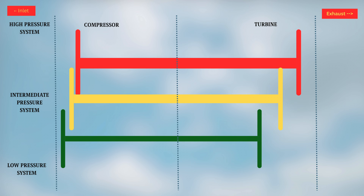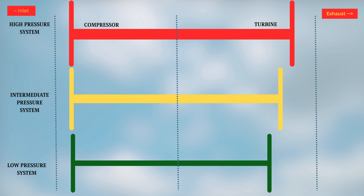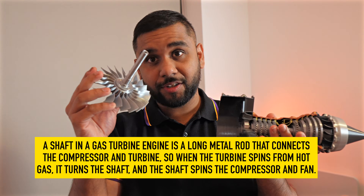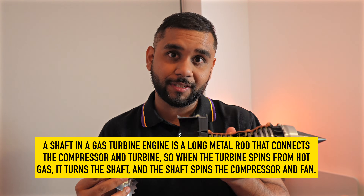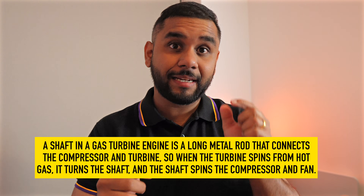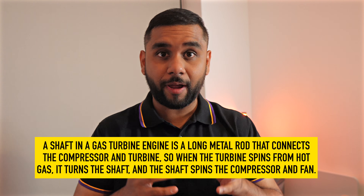The first thing you need to know is this engine is actually three engines sharing one body: the low pressure system, intermediate pressure system, and high pressure system. Each system has a compressor at the front and a turbine at the back, and they are connected by independent shafts — this is the fan shaft, and there are two more shafts inside. To understand it better, let's follow a single molecule of air through the gas turbine engine.